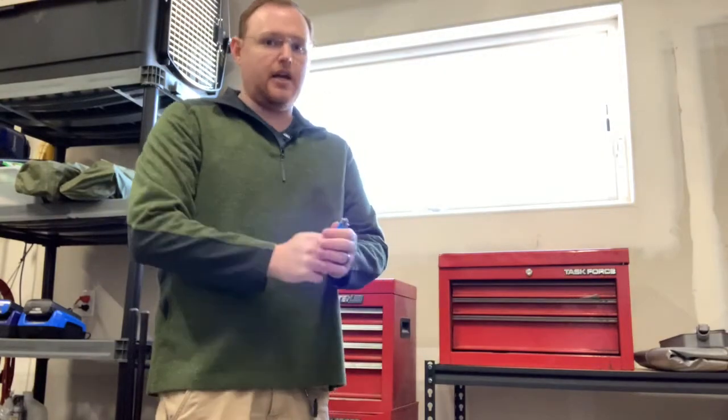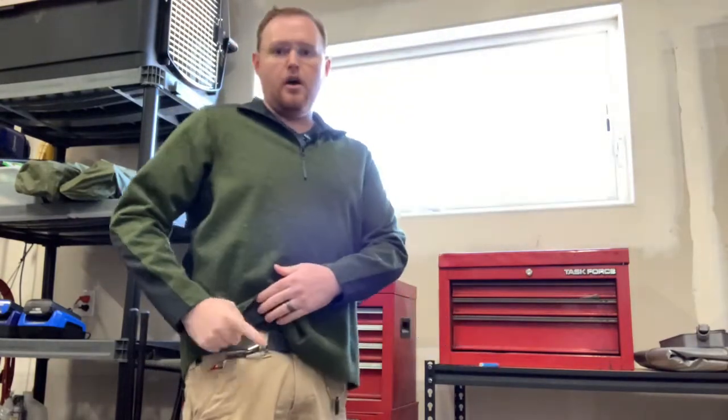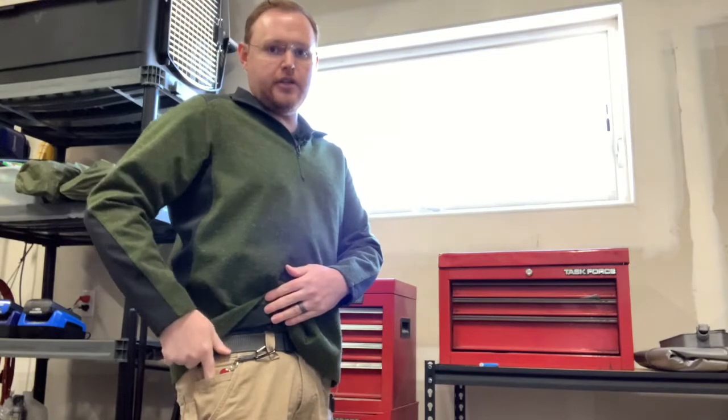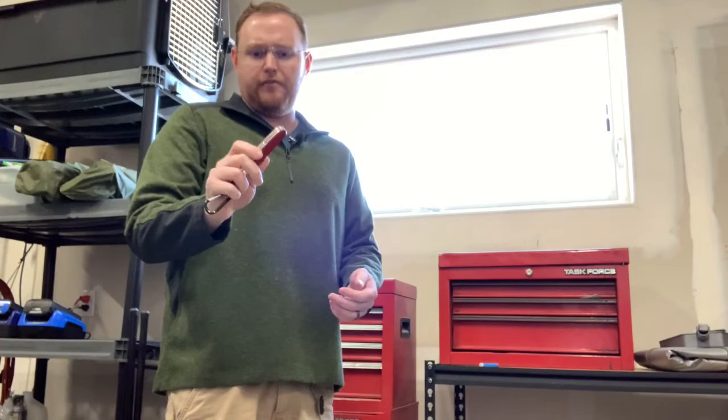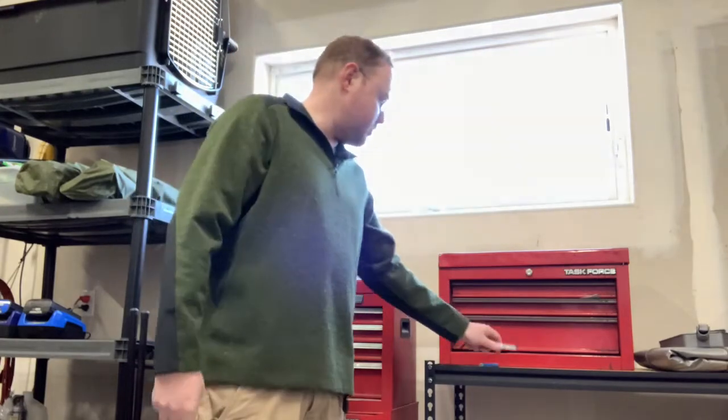In the right front hand pocket I have a mini Bic lighter. On a carabiner to a lanyard in the fifth pocket I have the Victorinox Tinker or Super Tinker. I forget which one but I'll have it linked below in the description.